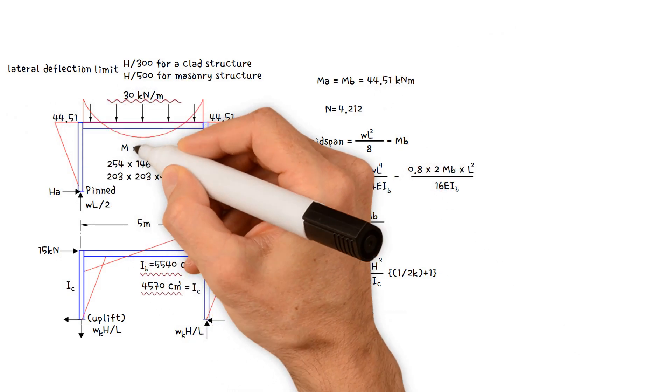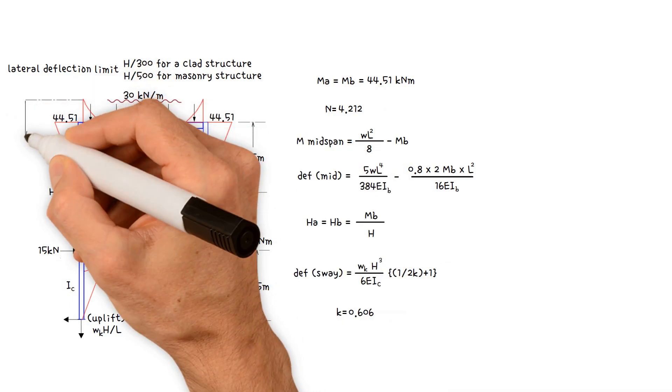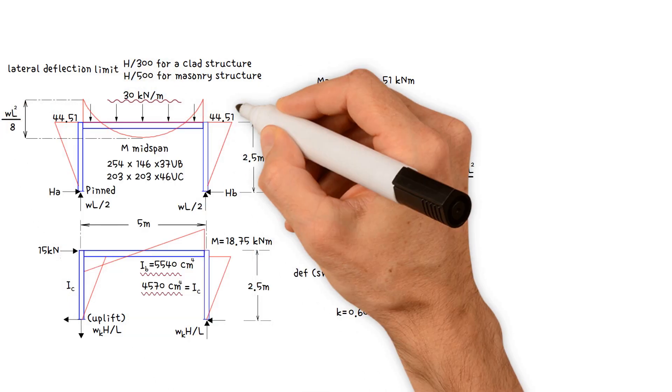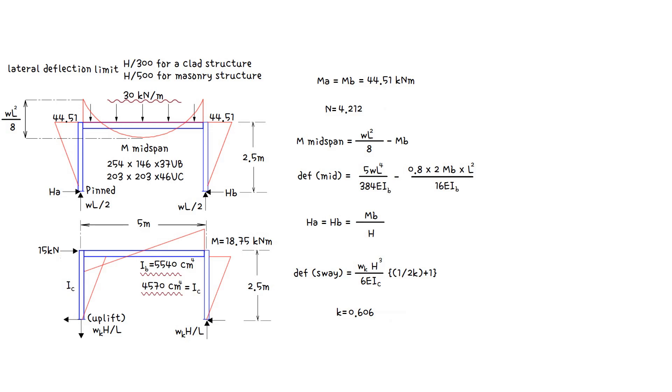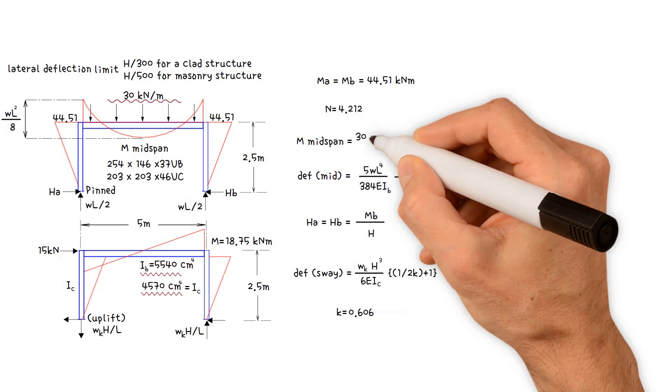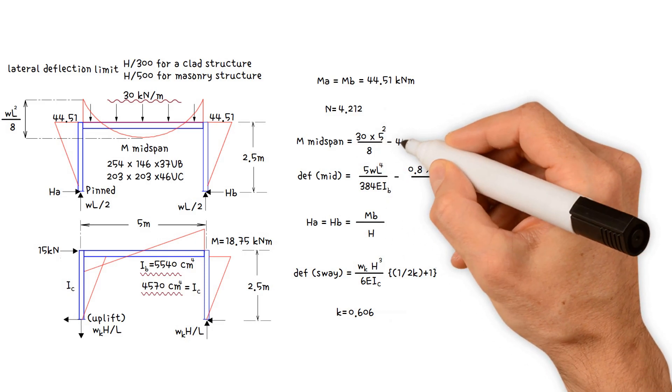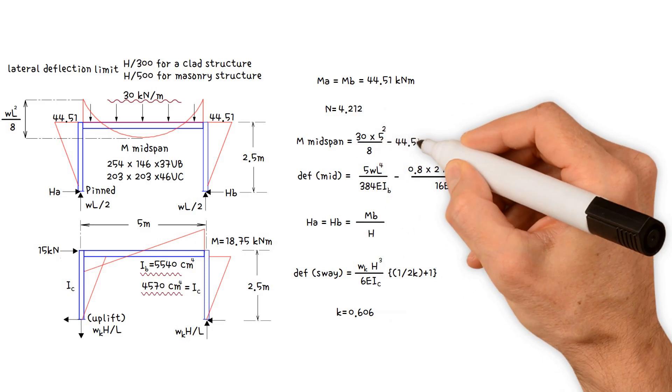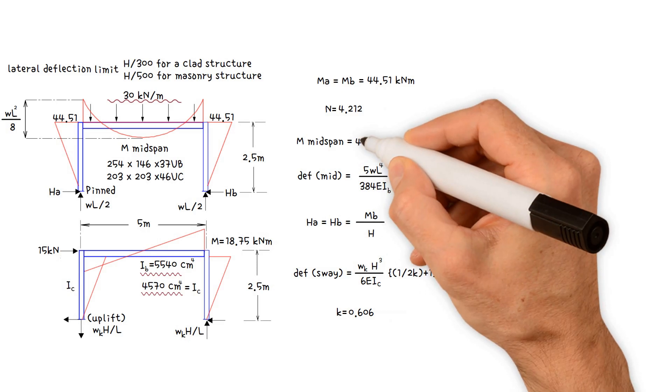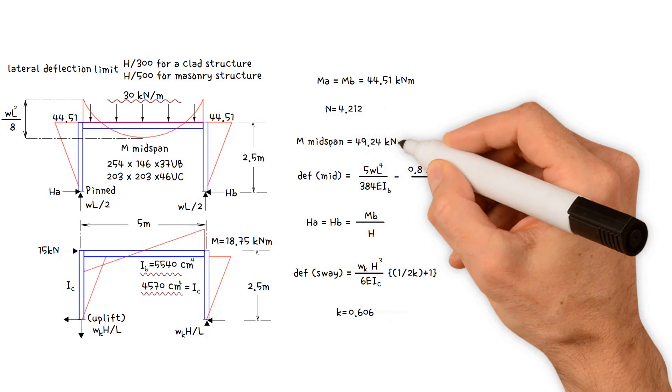Then, calculate the beam midspan moment, which equals wl squared over 8 minus the beam end moment. Therefore, 30 times 5 meters squared divided by 8 minus the beam end moment 44.51 kilonewtons meter. This gives us 49.24 kilonewtons meter.